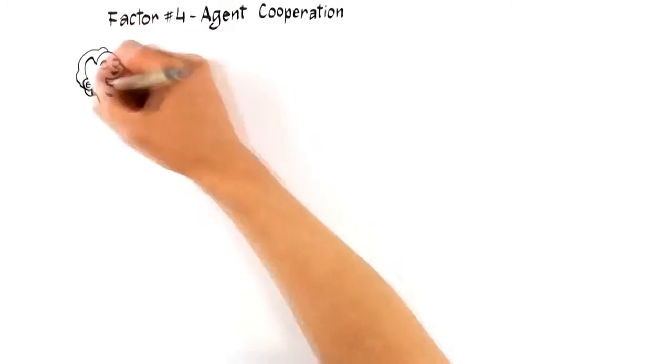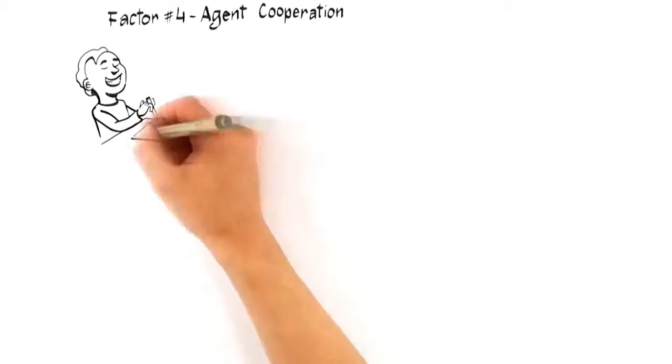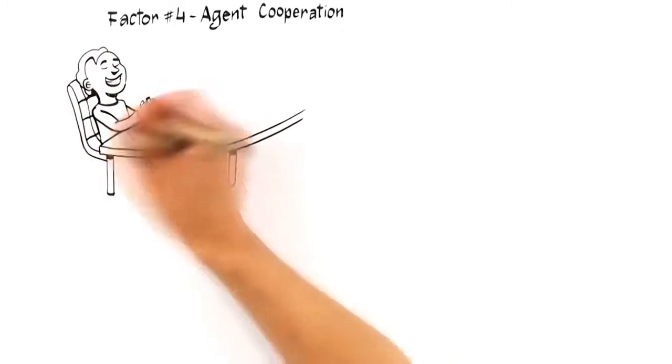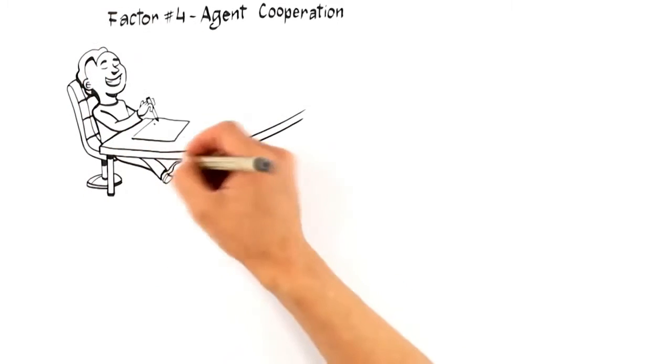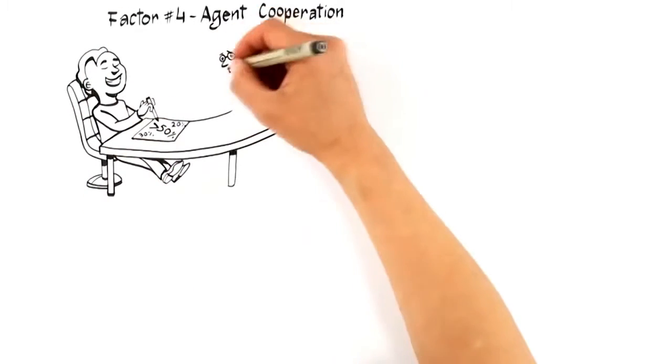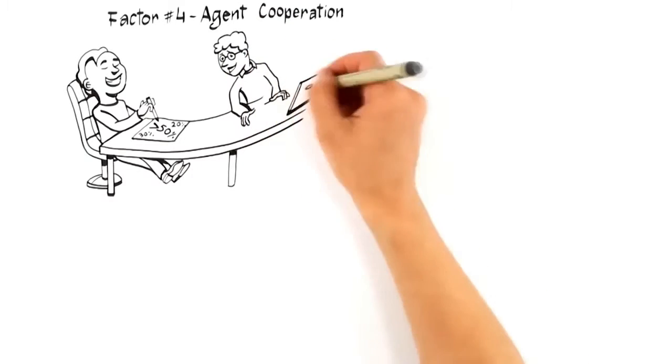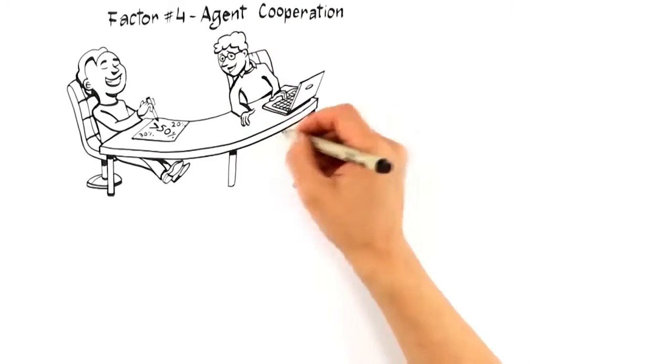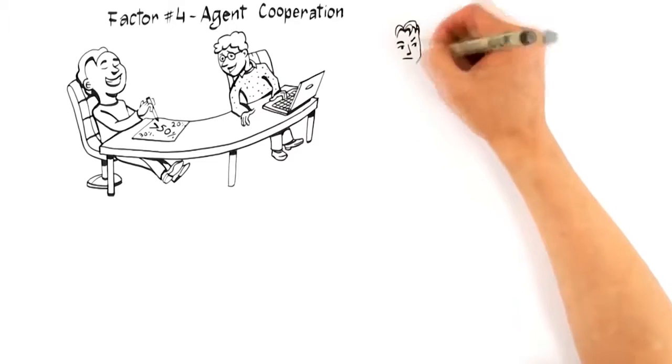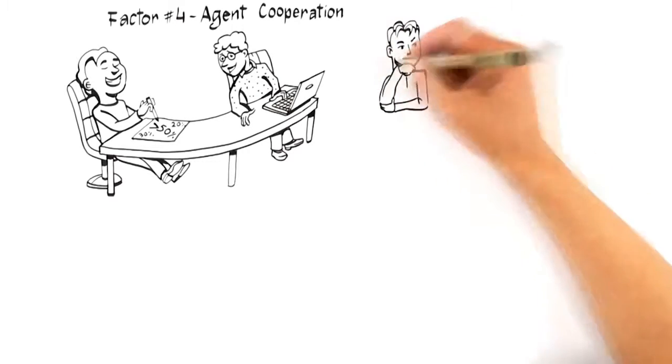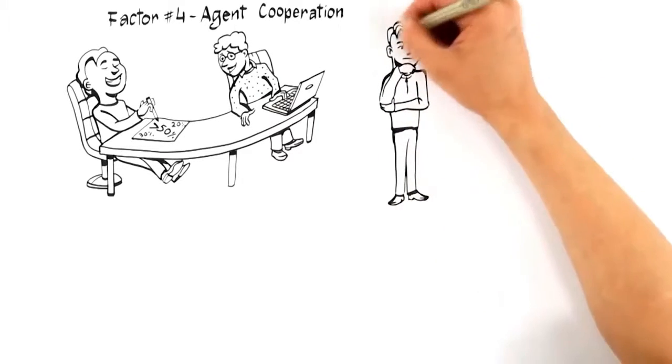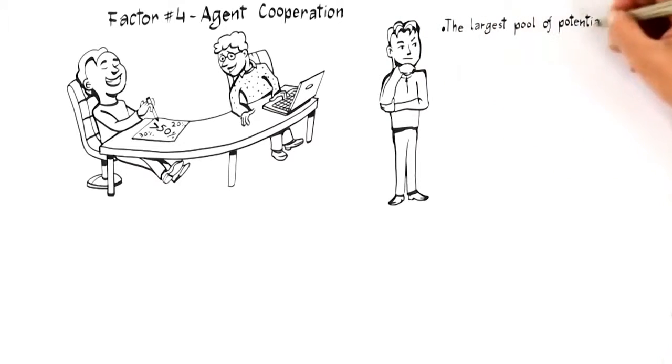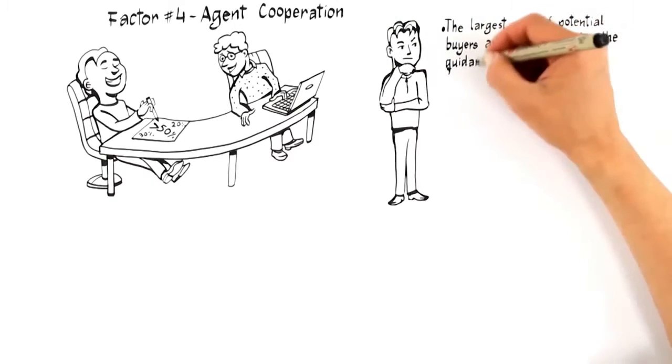Agent cooperation. Agent cooperation simply predicts that there is a greater than 50% chance that once your home is exposed to the market, another real estate professional will bring you a buyer. Since the largest pool of potential buyers are probably under the guidance of another agent, it's critical that your expert advisor allocate a portion of their marketing budget to get your home in front of the top agents in the market who represent buyers.